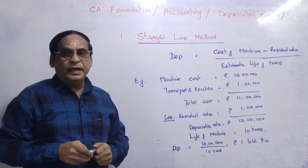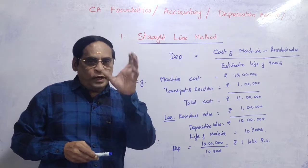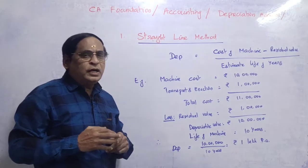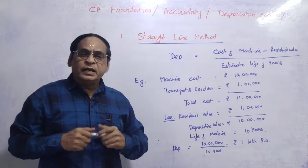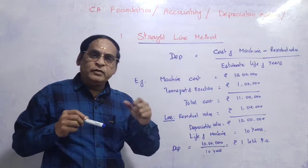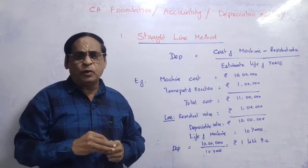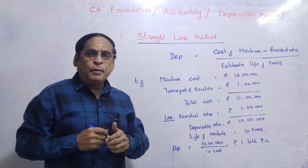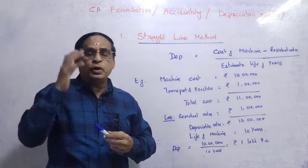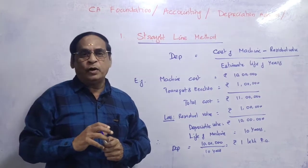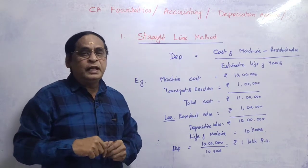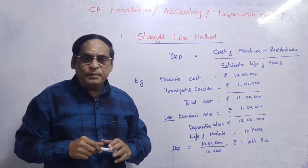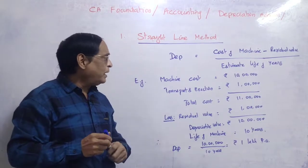Under the Straight Line Method, depreciation is constant — the same percentage each year. The formula is: total cost of the machine minus residual value, divided by the life of the machine in years. Residual value is the scrap value — what you can sell the machine for at the end of its life. The life of the machine might be 10 or 15 years.